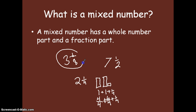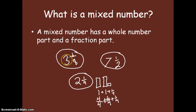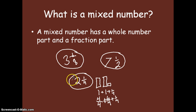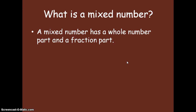So that's what a mixed number is. A mixed number is simply a number where you have a whole number part and a fraction part. In this mixed number, we have 3 as our whole number and 1 eighth as our fraction part. In this example, we have 7 as our whole number and 1 half as our fraction part. In this example, we have 2 as our whole number and 1 fourth as our fraction part. Let me clear my board and go on to the next definition.